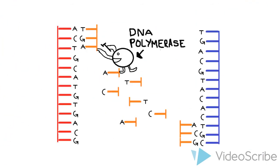Complementary base pairing ensures that the strands are identical to their parent strand, as adenine always pairs with thymine and cytosine with guanine. This complementary base pairing is carried out by the enzyme DNA polymerase.